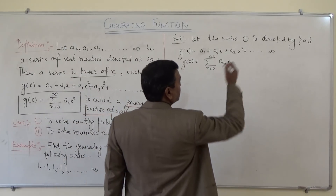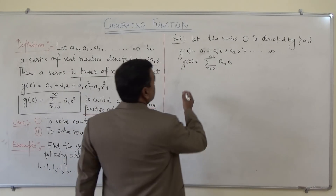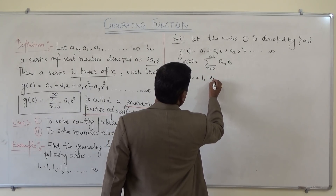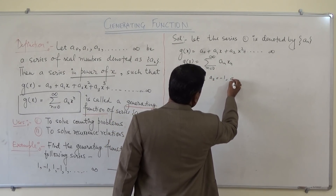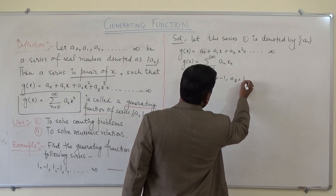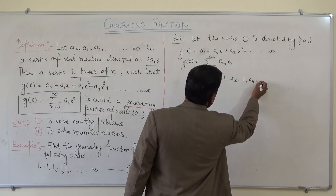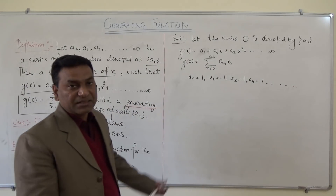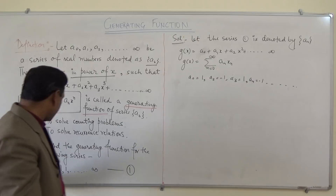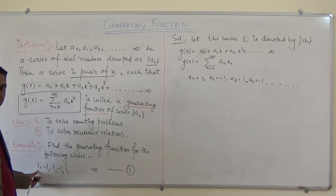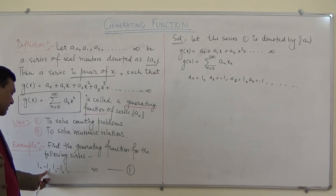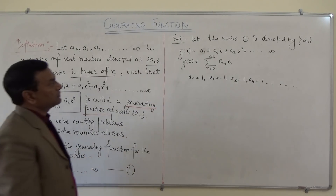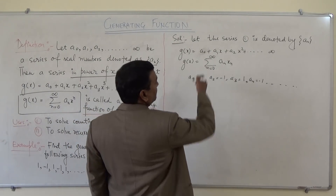Since the series is denoted by aₙ, we can identify: a₀ equals 1, a₁ equals −1, a₂ equals 1, a₃ equals −1, a₄ equals −1, and so on. These are the values of a₀, a₁, a₂, a₃.